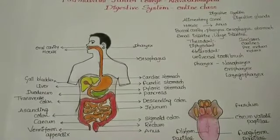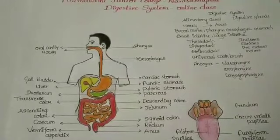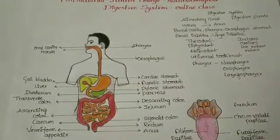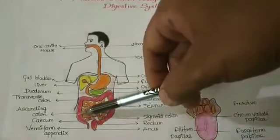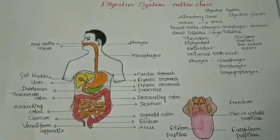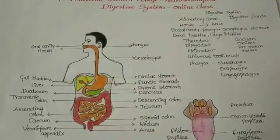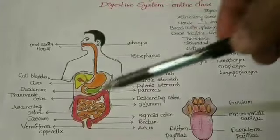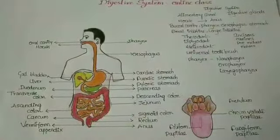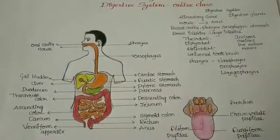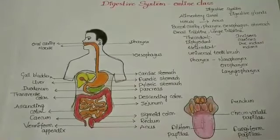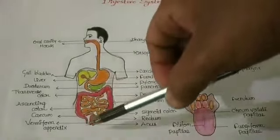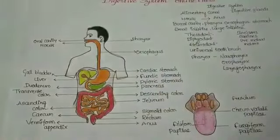The large intestine consists of the caecum, colon, and rectum. The caecum is a blind sac-like structure which holds symbiotic microorganisms. It has a finger-like projection called the vermiform appendix, which is a vestigial organ in human beings.